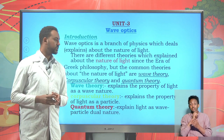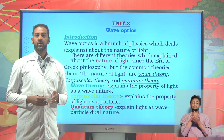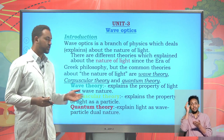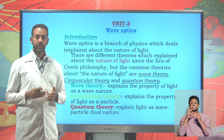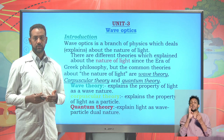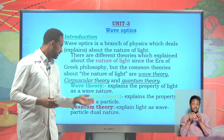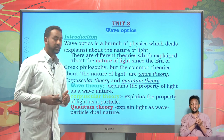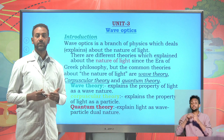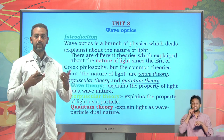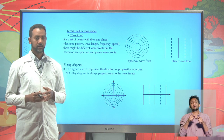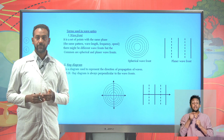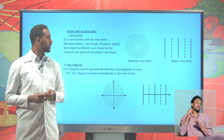Wave theory was first proposed by Christian Huygens, who tried to explain all four properties of waves — reflection, refraction, diffraction, and interference — using a wave nature. Corpuscular theory tries to explain mainly reflection and refraction due to light having a particle nature. To understand these theories, we should first know the main terms under these units: wavefront and ray diagram.